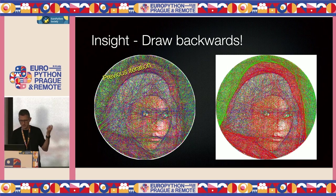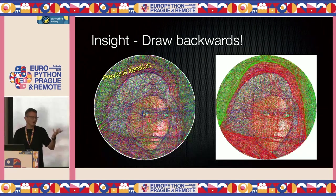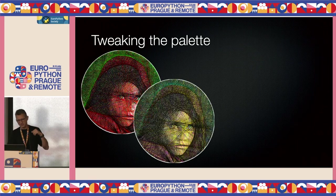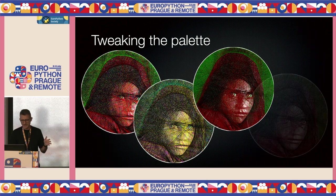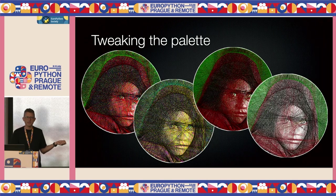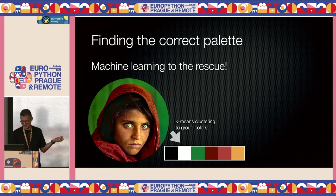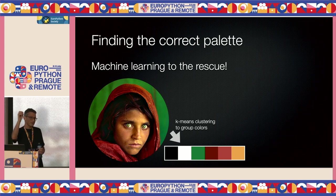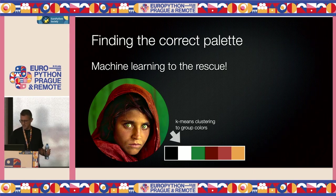I tried different color schemes — RGB was the obvious one — but nothing was working. Then I said: let's use machine learning. There's an algorithm called k-means clustering which takes an image and outputs the most dominant colors, grouping them into clusters. In this case six colors — this is going to solve my problem, right?